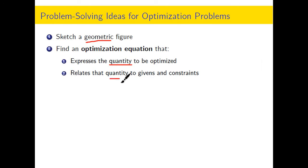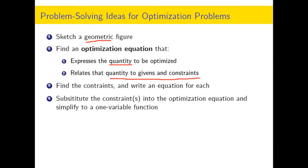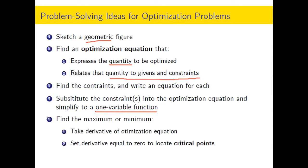We're going to write an equation for each of the constraints, and we're going to substitute the constraints into the optimization equation. That's the simplification that gives us a one-variable function. Then we are doing a straightforward optimization from calculus to find the max or min.